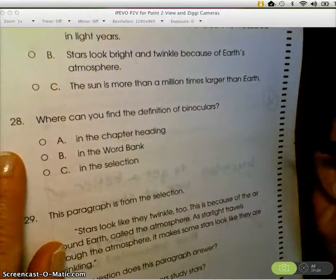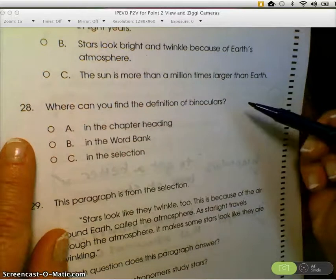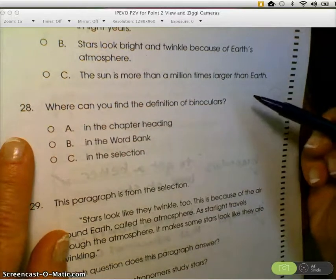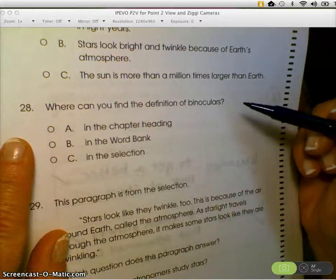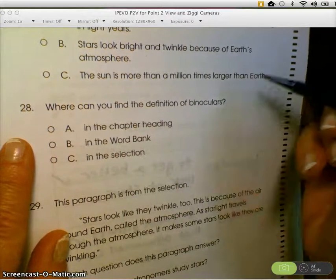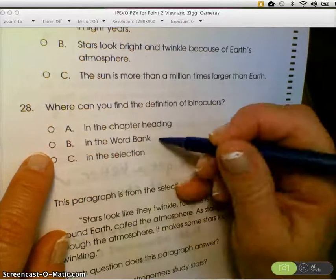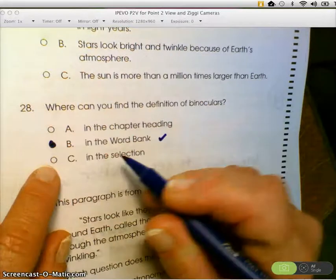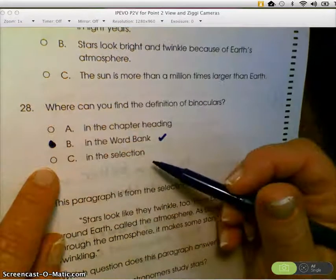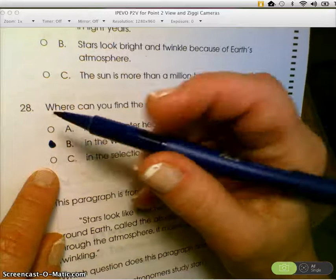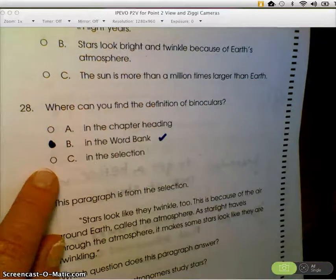28, where can you find the definition of binoculars? This one is so easy, it's hard. Where do you always find definitions when there's not a dictionary? In the chapter heading? No. In the word bank? Of course. Or in the selection. It might be in the selection, but your best answer here is the word bank always for the meaning of words. Good.